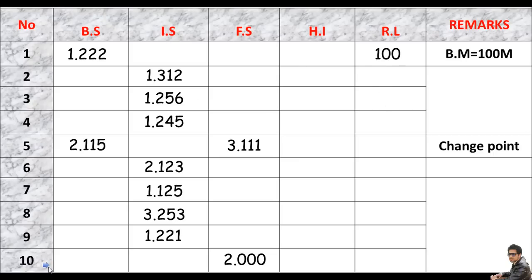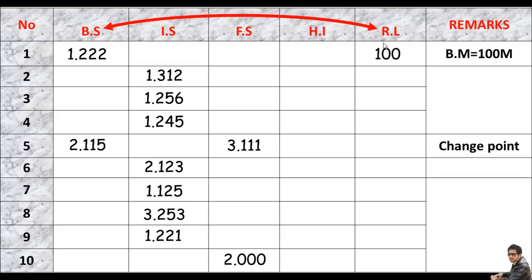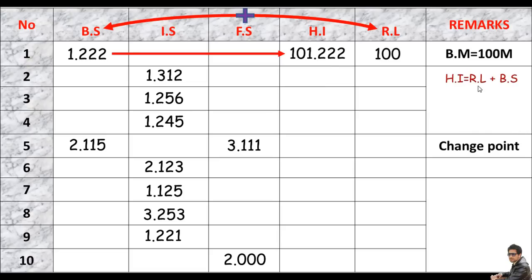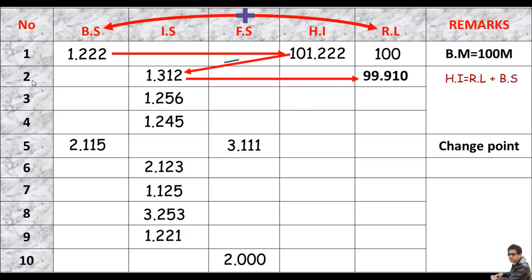I need to calculate the RL of the remaining points from 2 to 10. To calculate the RL of these points, we need HI. To calculate HI, we add RL and backside: HI = RL + BS. Adding these gives HI = 101.222. Then to get the RL of point 2, subtract the inter side from HI. Similarly, subtract the inter side of point 3 from HI to get the RL of point 3, and so on.